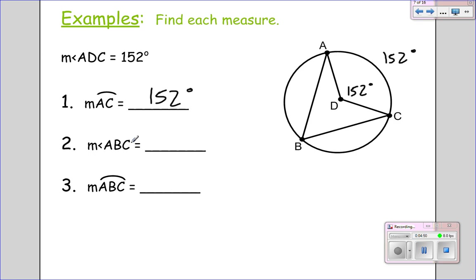Now it's asking me for angle ABC down here. This is an inscribed angle. And it intercepts this arc right here. Which we know is 152. So the inscribed angle would be half of 152. Which is 76 degrees.